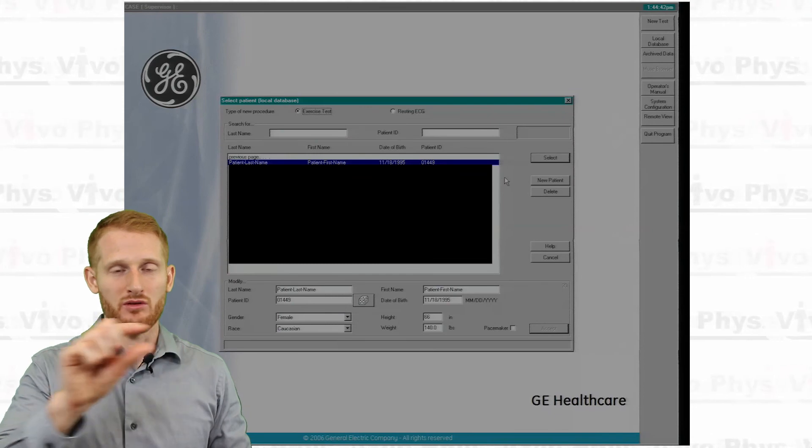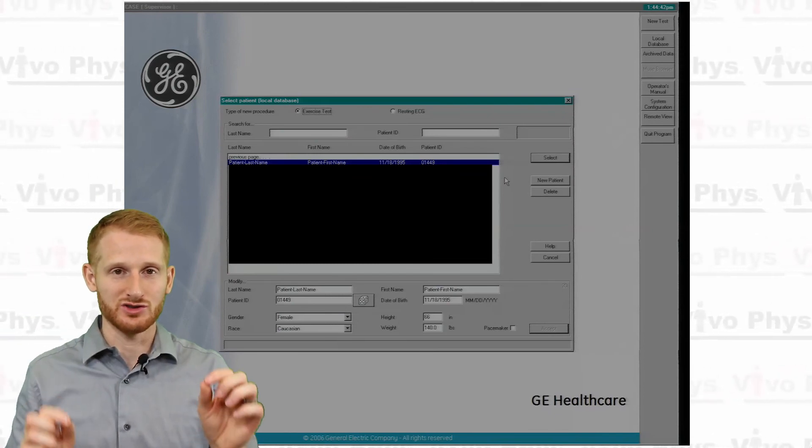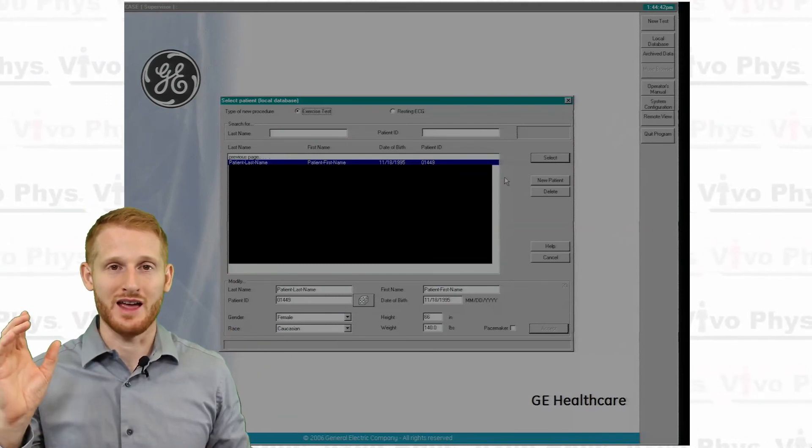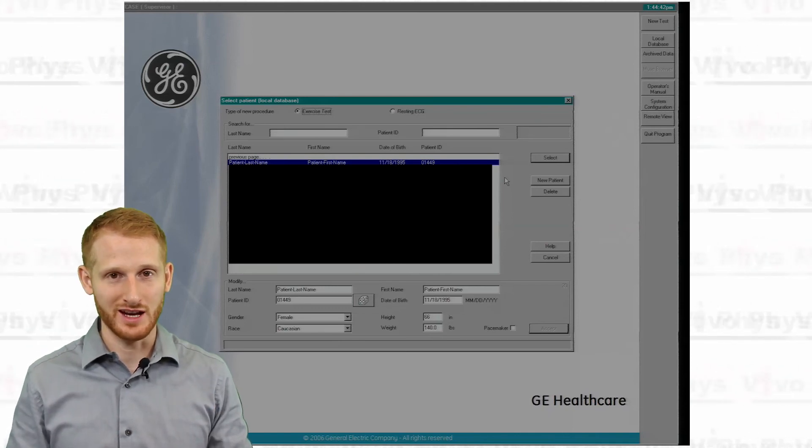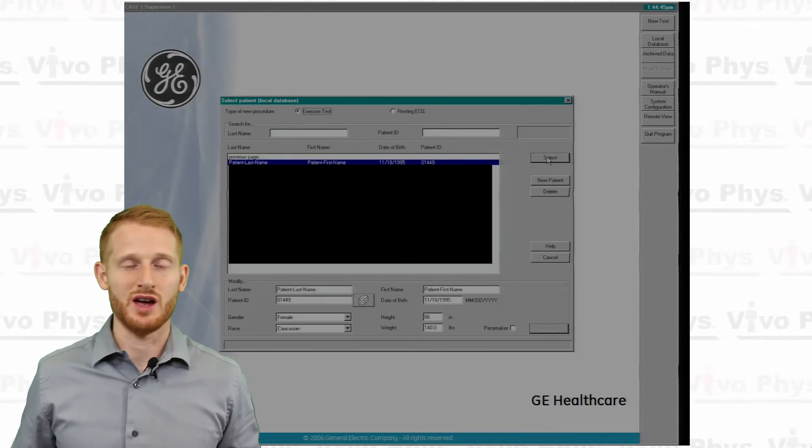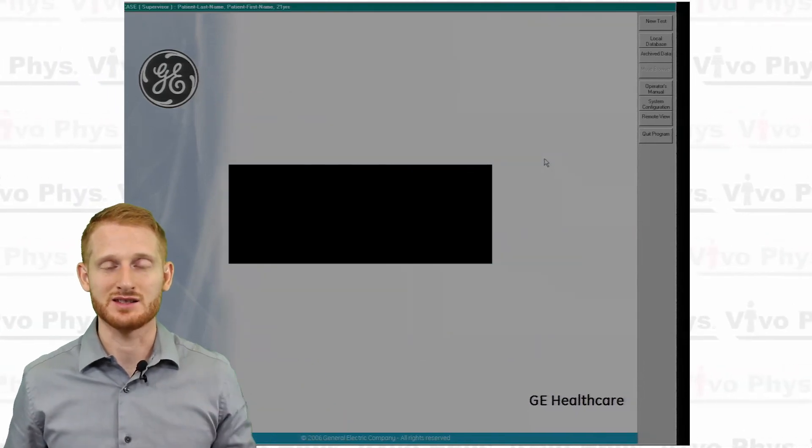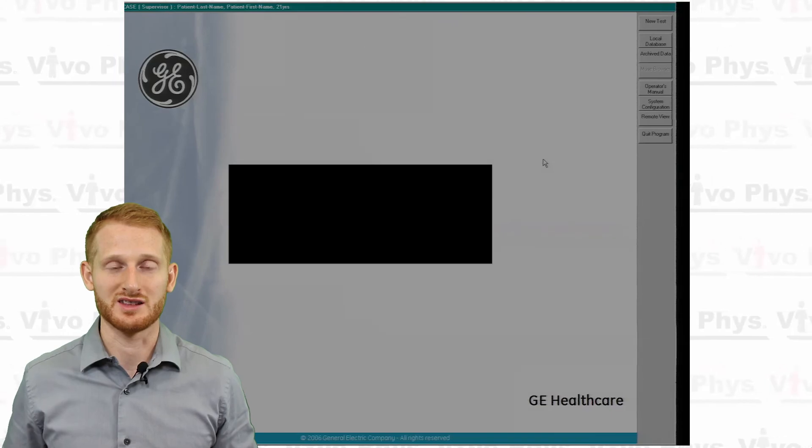Make sure that you put in the rest of the information, and then go ahead and hit accept. Then go to the top of this box, and there's check boxes for either a resting test or an exercise test. Make sure you check the appropriate type of test that you plan on doing. Once you have the person selected and the type of test selected, then you just go ahead and click select.